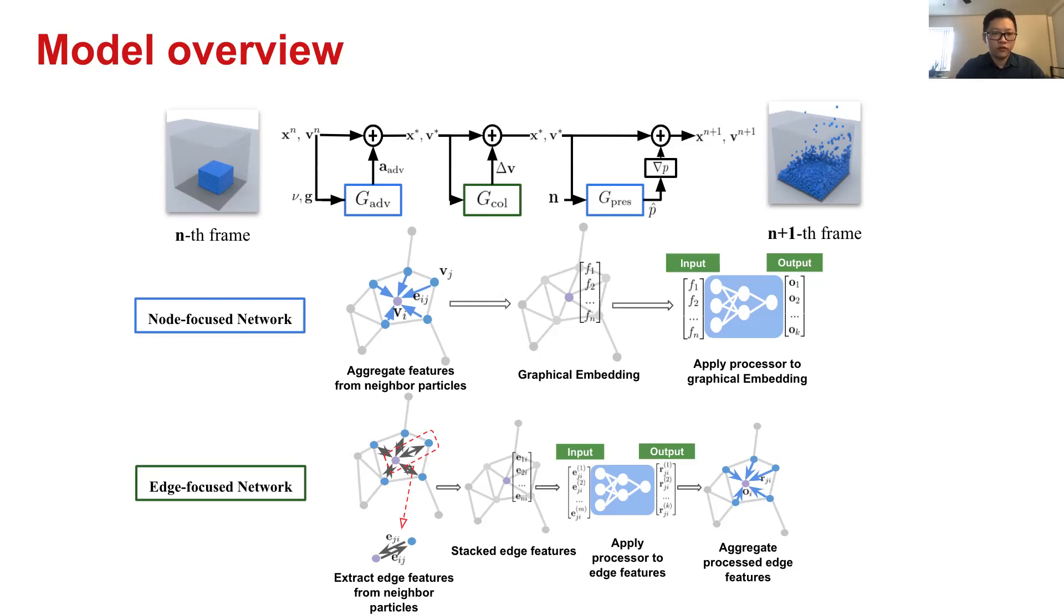Specifically for advection net and pressure net, we use node-focused graph neural network structure. Node-focused network passes messages and learns and operates on node features. As for collision net, we use edge-focused network to fulfill the learning.